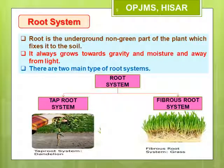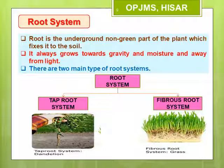The root is the underground, non-green part of the plant which fixes it to the soil. It always grows towards gravity and moisture and away from light. To observe the root system, gently pull out a grass plant and a mustard plant from the soil without damaging their roots, wash them off with water, and observe carefully. You will see that these two plants have different types of roots: the tap root system and the fibrous root system.